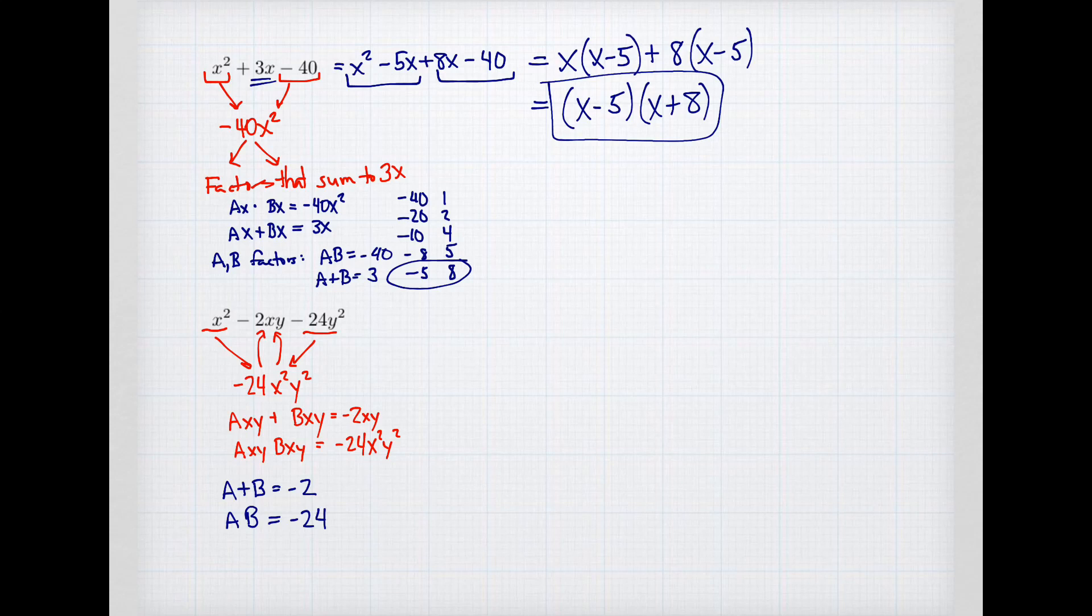1 times negative 24 is too far apart. When I add those I get negative 23. 2 times negative 12 is negative 10. 3 times negative 8, getting closer, that's negative 5. 4 times negative 6, there we go. When I add those I get negative 2. So 4 plus negative 6 gives me negative 2. I found the factors. And so I'm going to rewrite this: x squared instead of negative 2xy will be plus 4xy minus 6xy minus 24y squared. So these middle terms, I've modified the minus 2xy to give me two terms so that now I can think about my grouping.